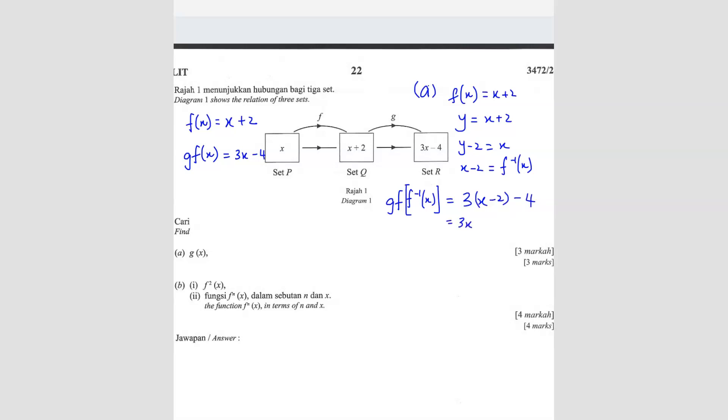So expand this. You get 3x minus 6 minus 4. Answer is 3x minus 10. Now question b.